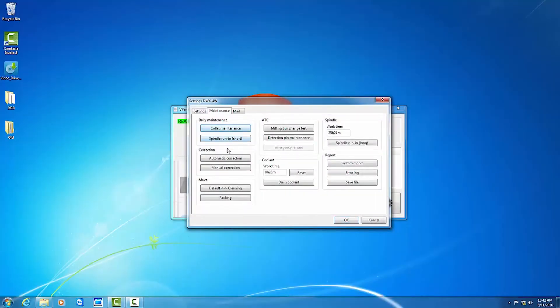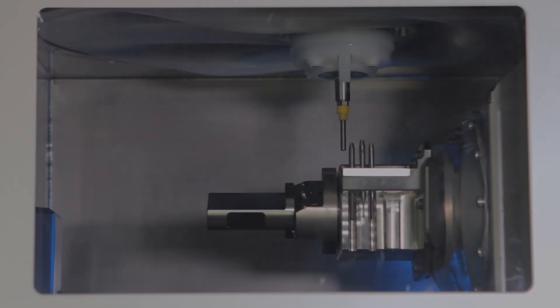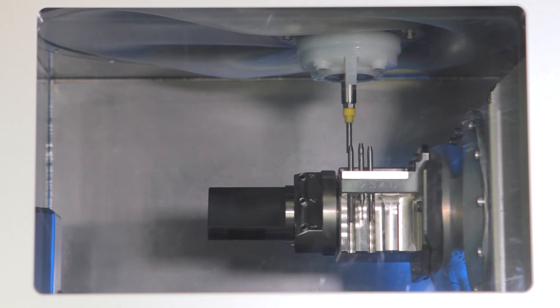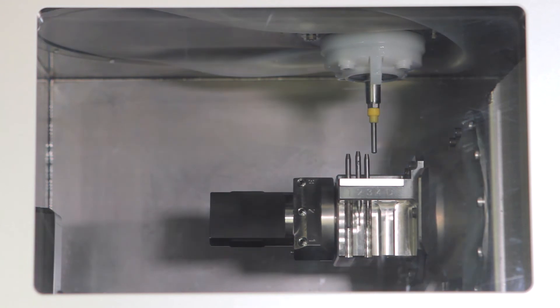In vPanel, click on Automatic Correction. This will start the calibration process for your DWX mill. Please note an advanced calibration should be performed during the initial installation. This process will be performed by a Roland certified technician.